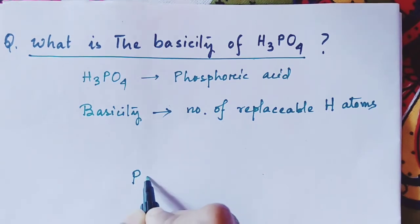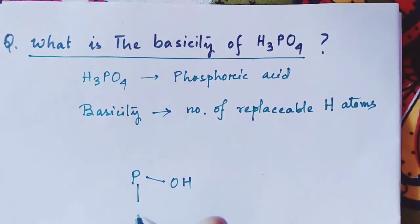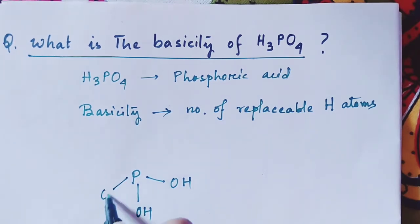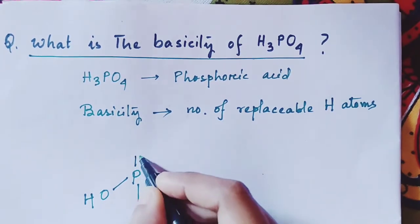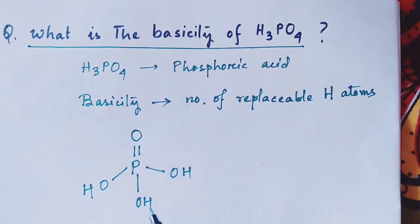The structure is like four oxygen, three hydrogen, one phosphorus. Now see, the hydrogens which are present as OH are actually easily replaceable.